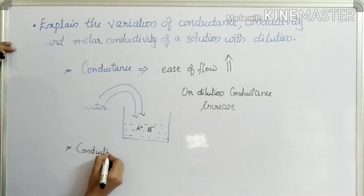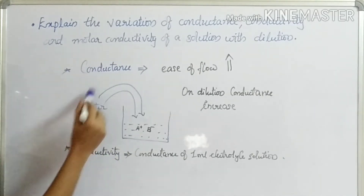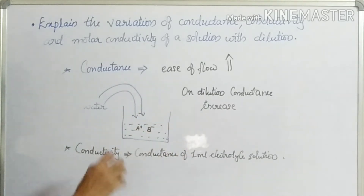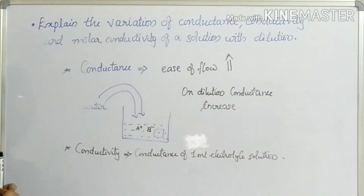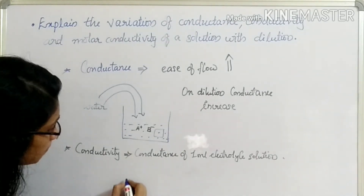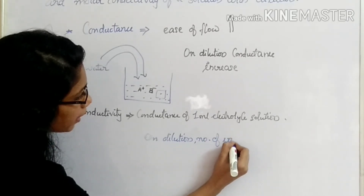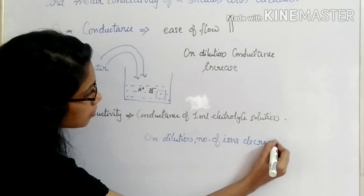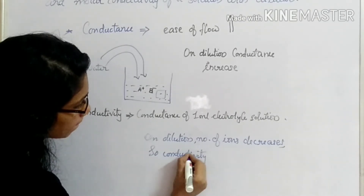For conductivity, we consider 1 mL of solution. On dilution, the number of ions per 1 mL decreases because the ions are spread farther apart. Therefore, conductivity decreases on dilution.